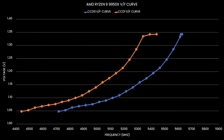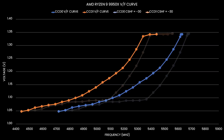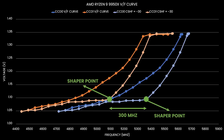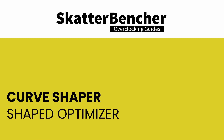Remember, there's a significant difference between the two CCDs on this Ryzen 9 9950X — not just in the factory-fused voltage-frequency curve, but also the fmax. CCD0 has a programmed fmax of 5750 MHz, whereas CCD1 has a programmed fmax of 5450 MHz, and that significantly impacts Curve Shaper behavior. With the high-frequency point set to minus 30, the Curve Shaper for both CCDs is remarkably similar in shape, but the shape doesn't start at the same point — that 300 MHz difference corresponds to the difference in fmax.